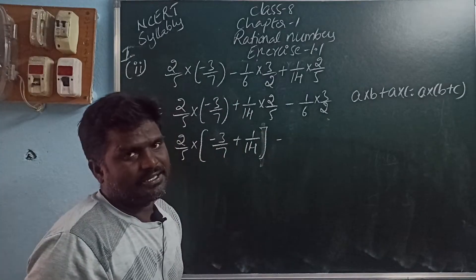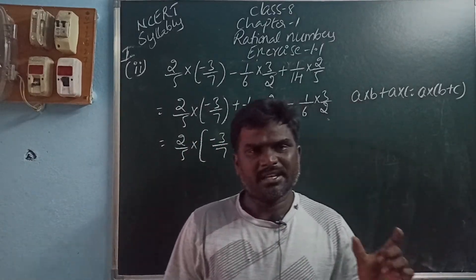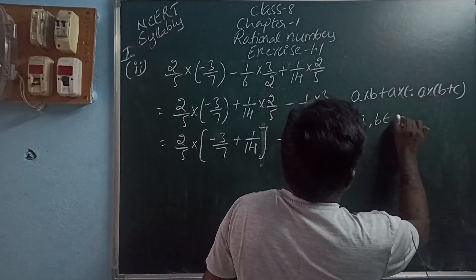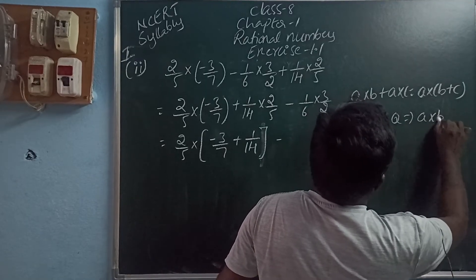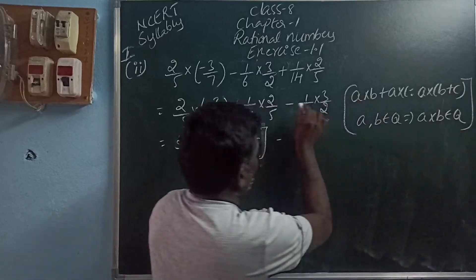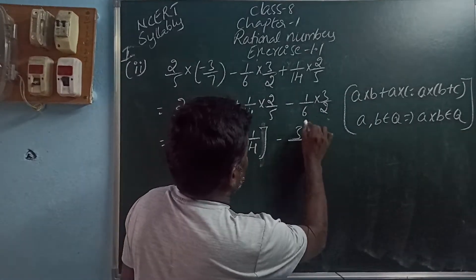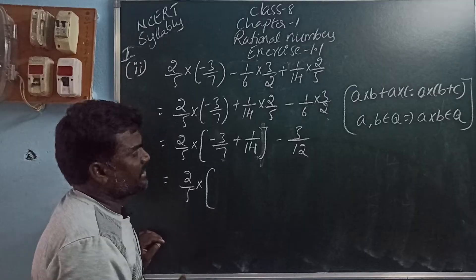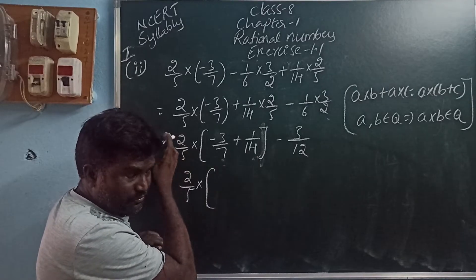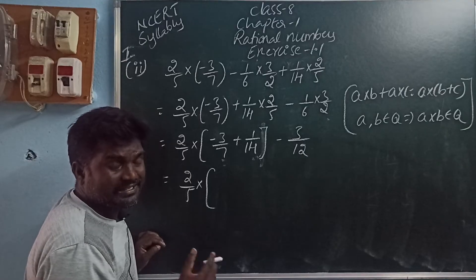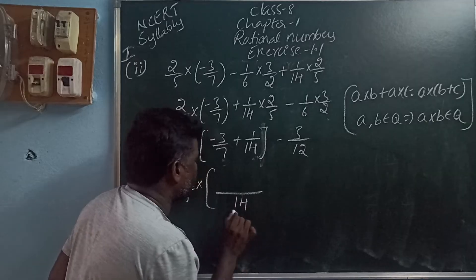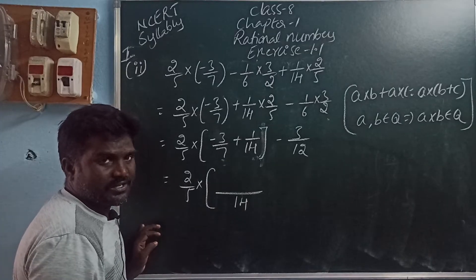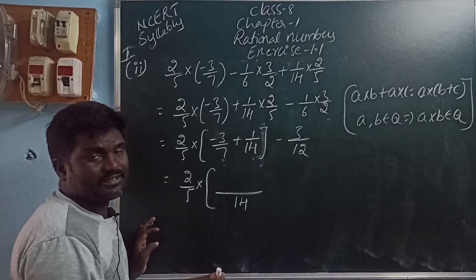These two are fractions. In rational numbers, one property states: if you take any two rational numbers, their product is also a rational number. That property is called the closure property. So if A and B are rational numbers, then their product A into B is also a rational number. Here, 1 into 3 is 3, by 6 times 2 is 12. So that is 2 by 5 into these two fractions. Write the common denominator. We take the LCM of the denominators 7 and 14. Since 14 is a multiple of 7, the LCM is 14.